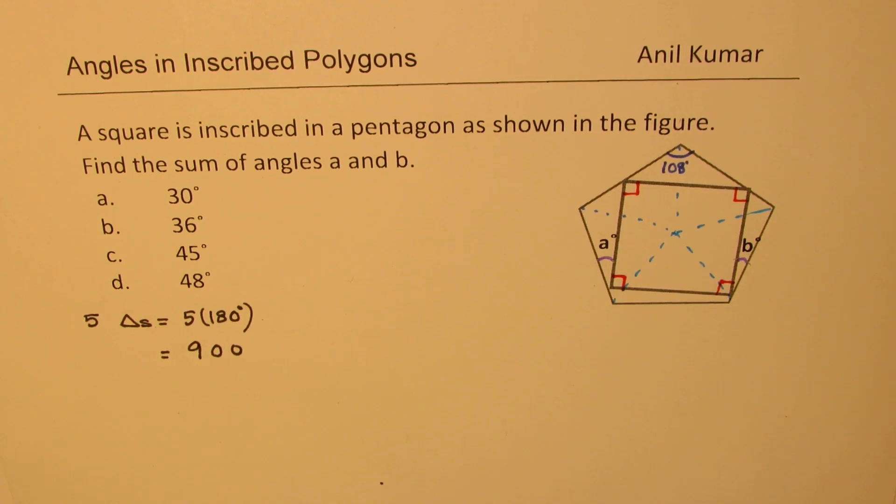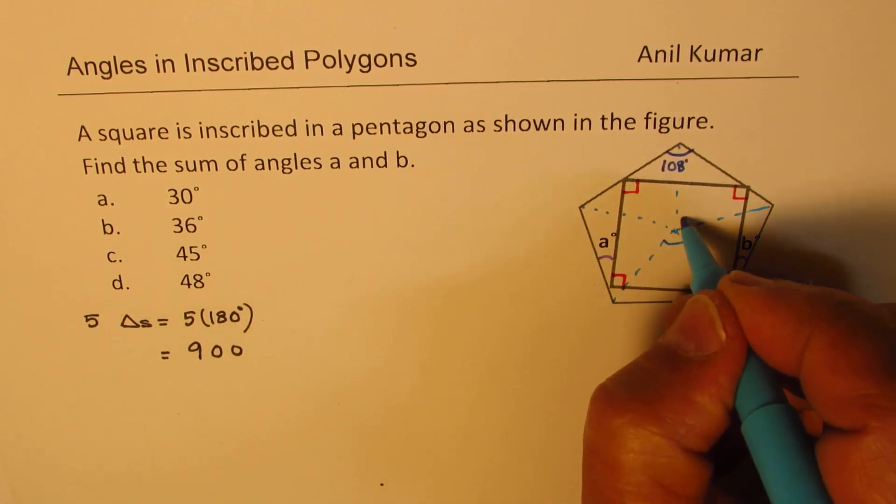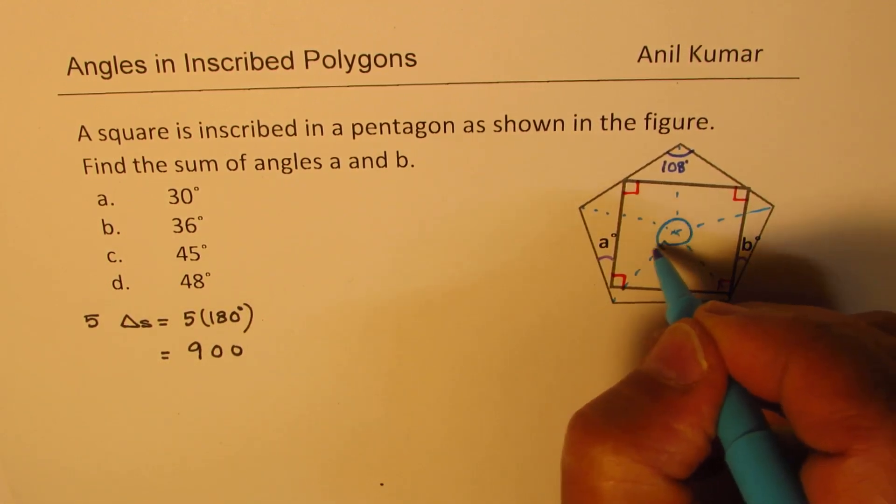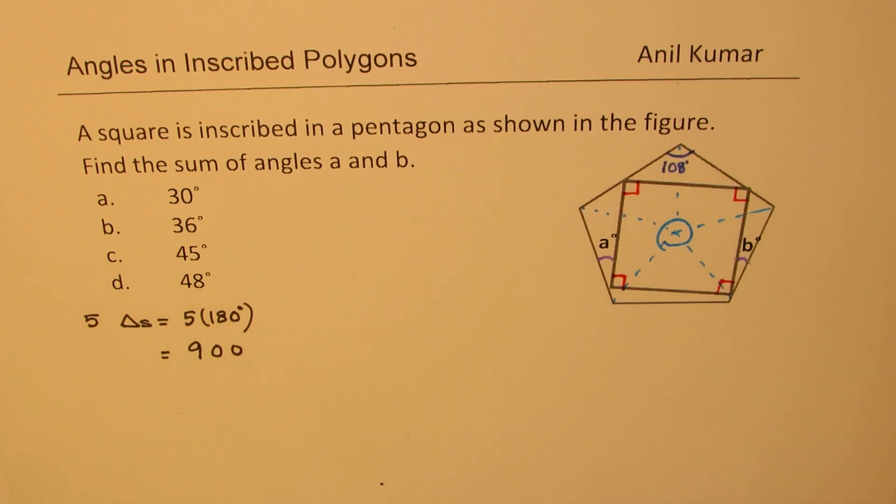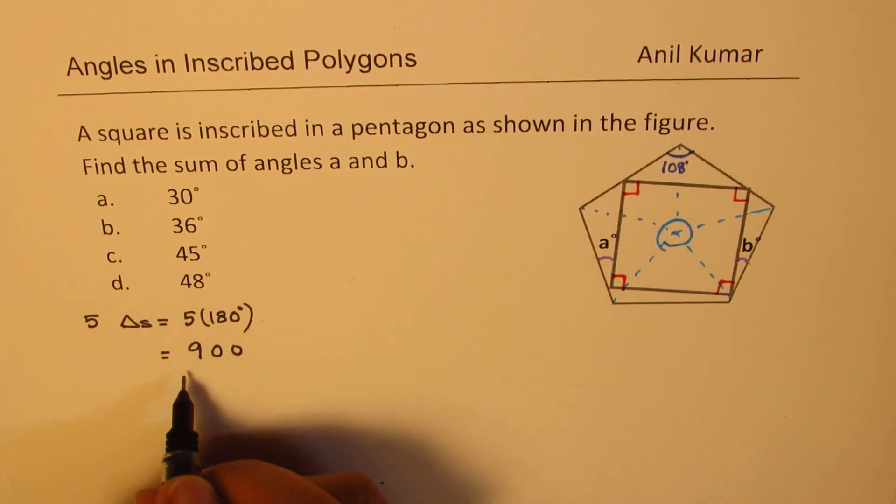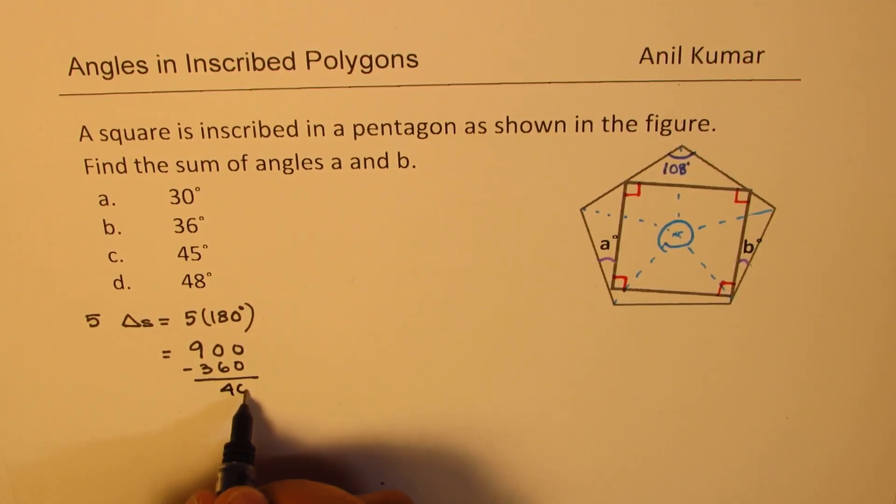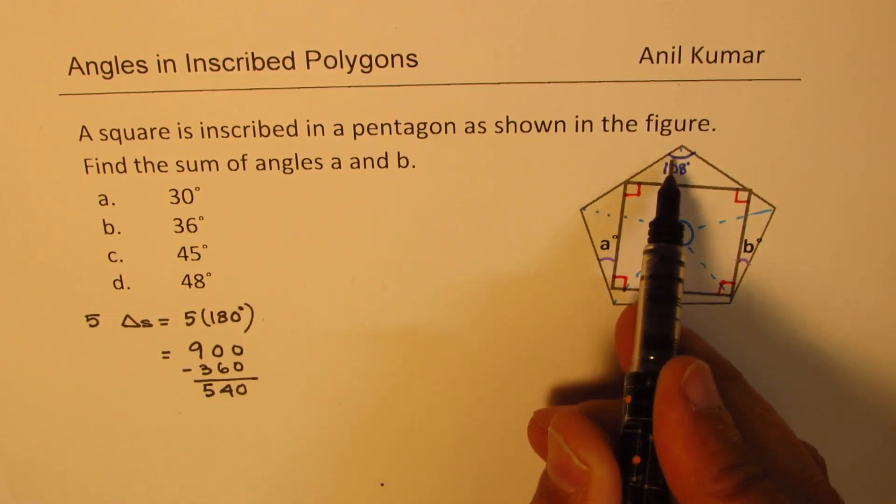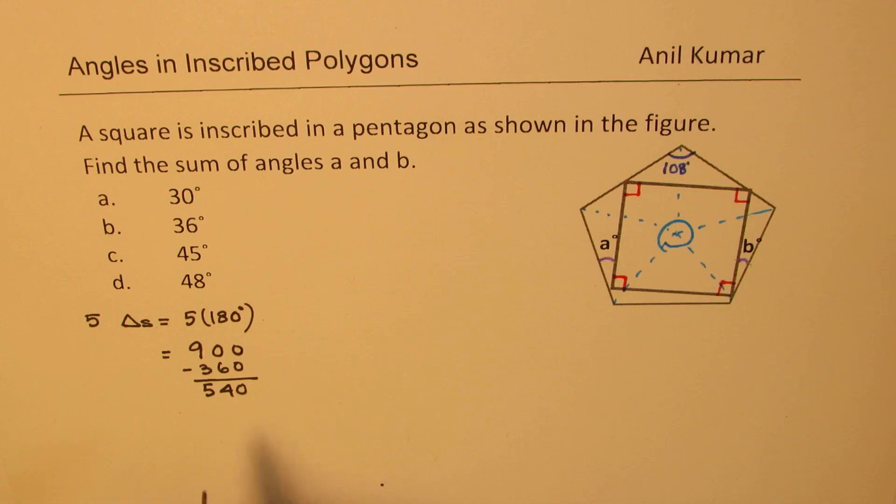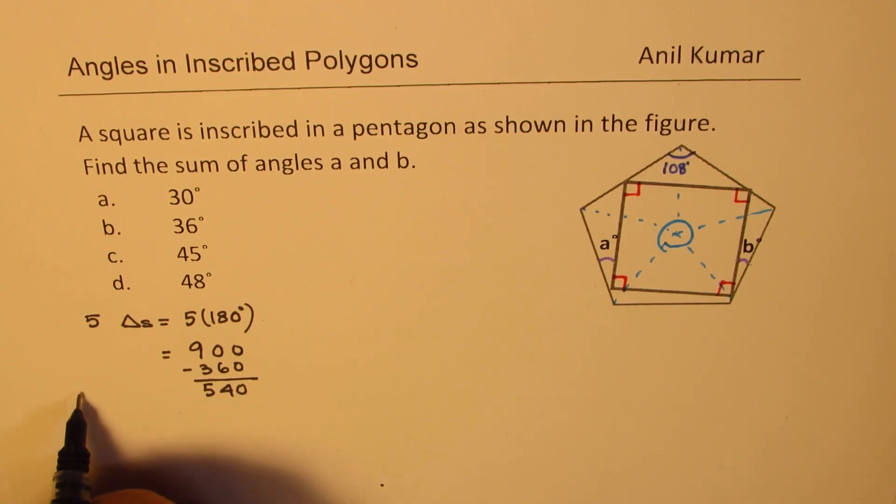Now the central angle is always 360 degrees, so these vertices, we could take away that angle. So if you take away 360 from this, you get 540 as sum of all the five angles. So this is five vertices.